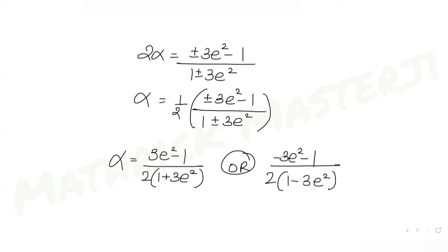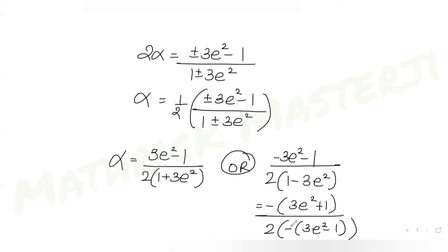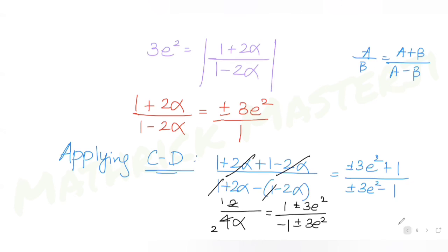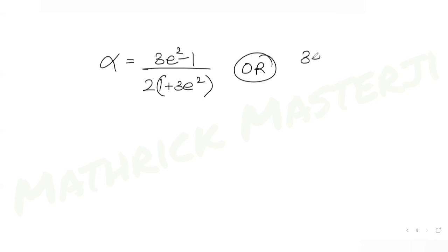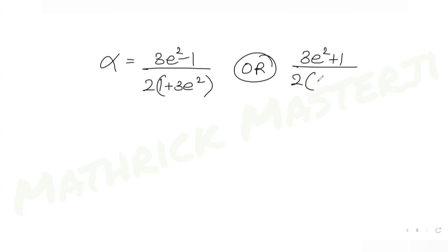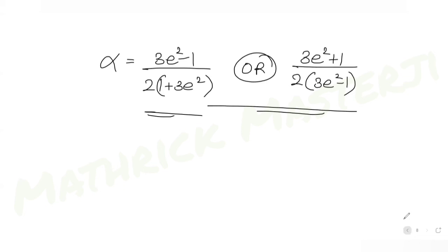Simplifying the second value by factoring out a negative sign from numerator and denominator: (-3e² - 1)/[2(1 + 3e²)] becomes (3e² + 1)/[2(3e² - 1)]. So the two values of α are: α = (3e² - 1)/[2(1 + 3e²)] or α = (3e² + 1)/[2(3e² - 1)].